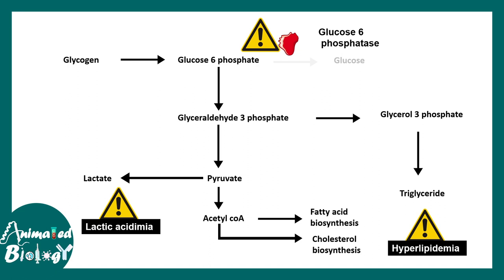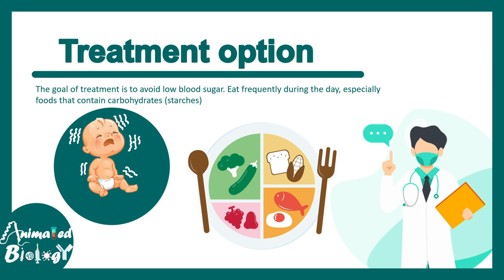Lactate can also be generated from pyruvate. When there is too much glucose-6-phosphate accumulation, it generates pyruvate, and that pyruvate creates excess lactate, leading to lactic acidemia. Other conditions such as hyperuricemia and hyperalaninemia can also occur in this disease.